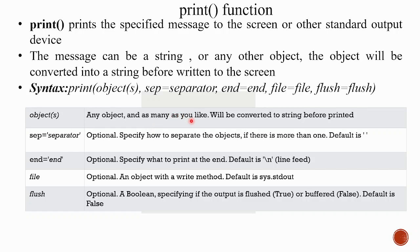Any object — as many as you like — will be converted to a string and printed. The sep parameter specifies how to separate the objects if there is more than one; the default is a space. The end parameter's default is a new line. The file parameter specifies the output object — the default is our screen.